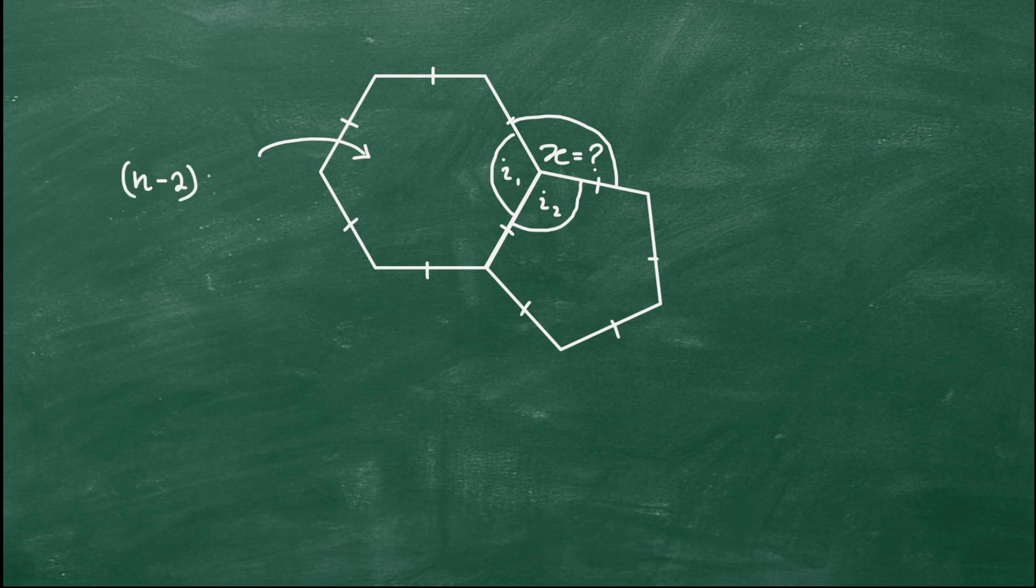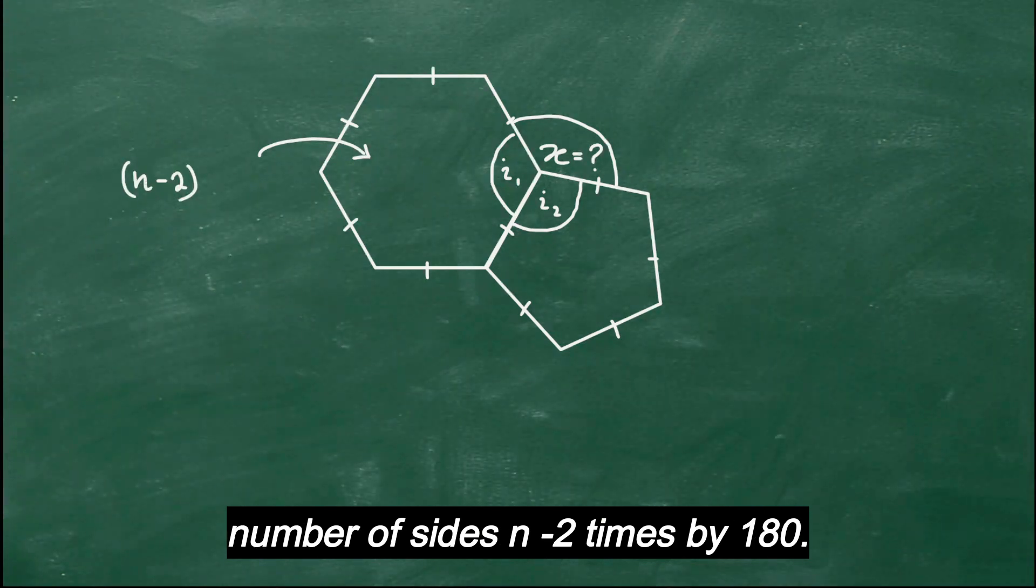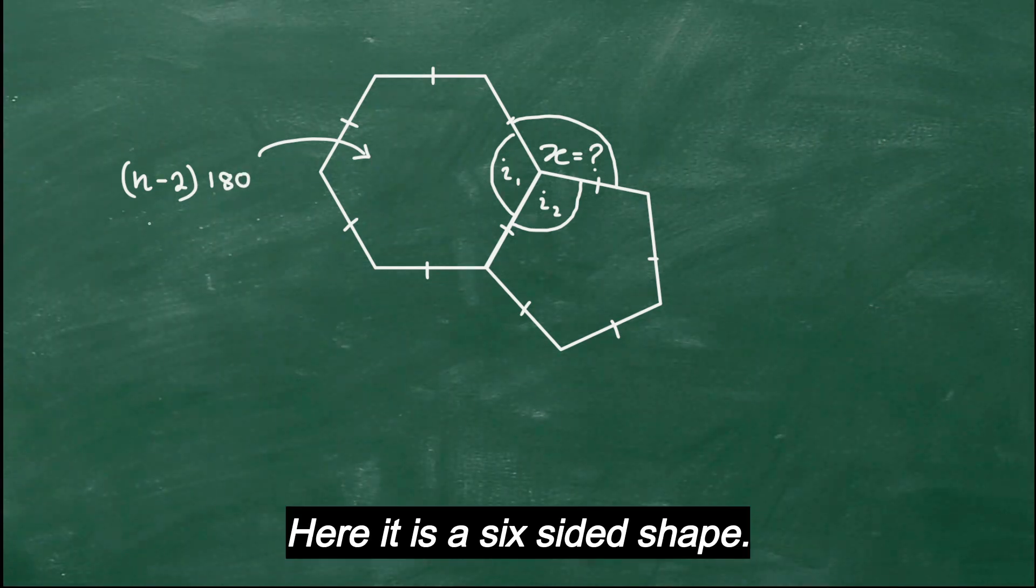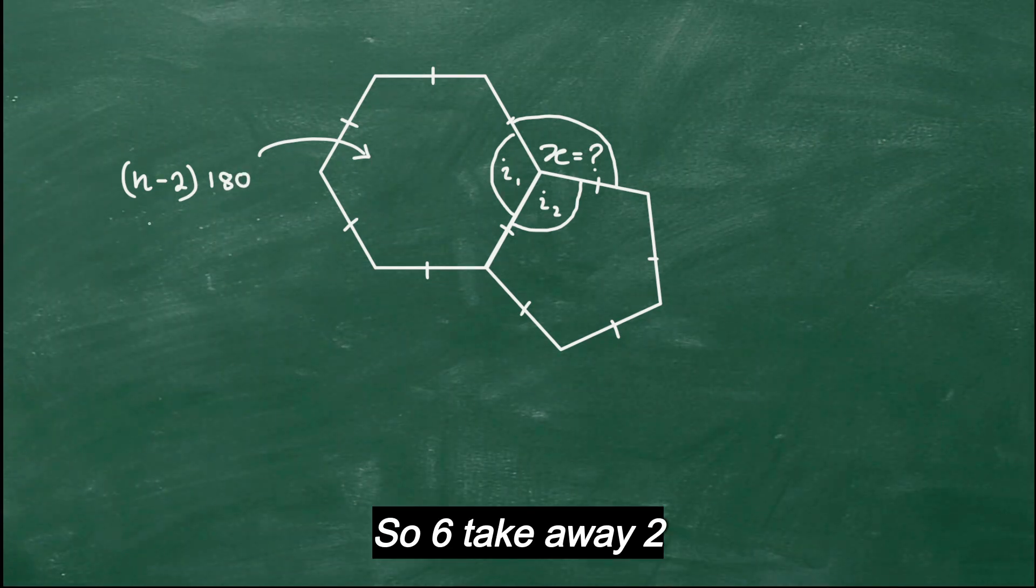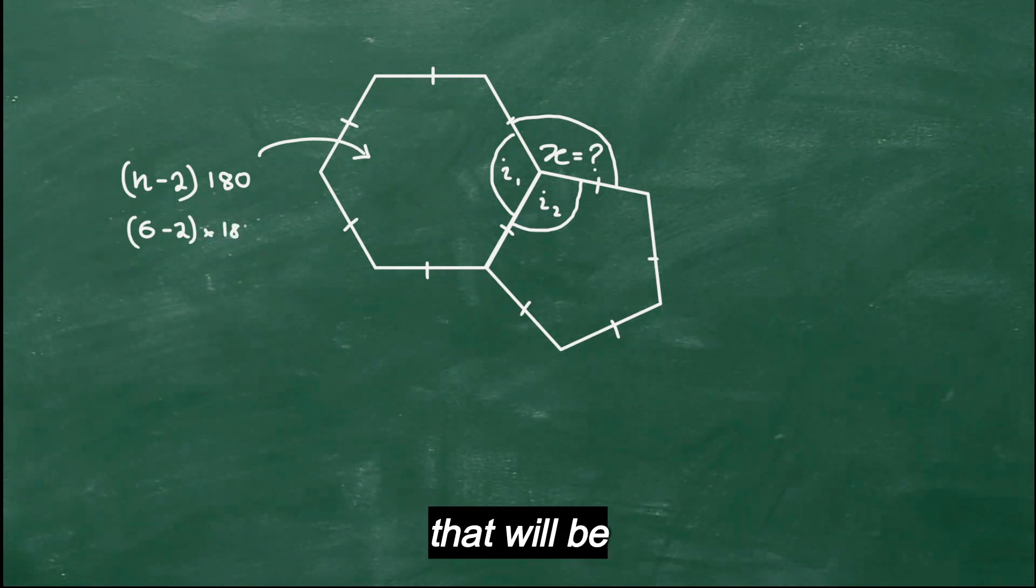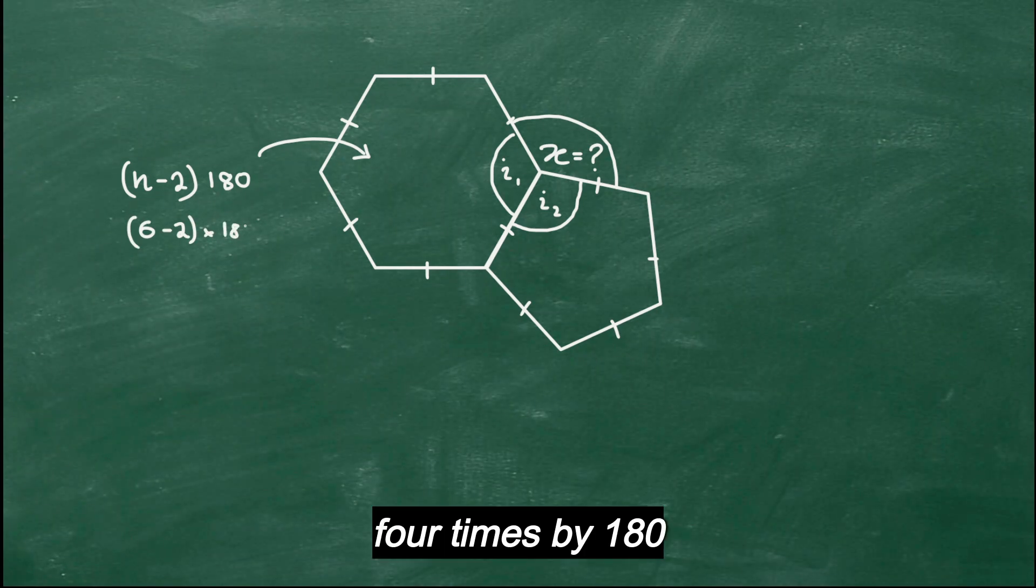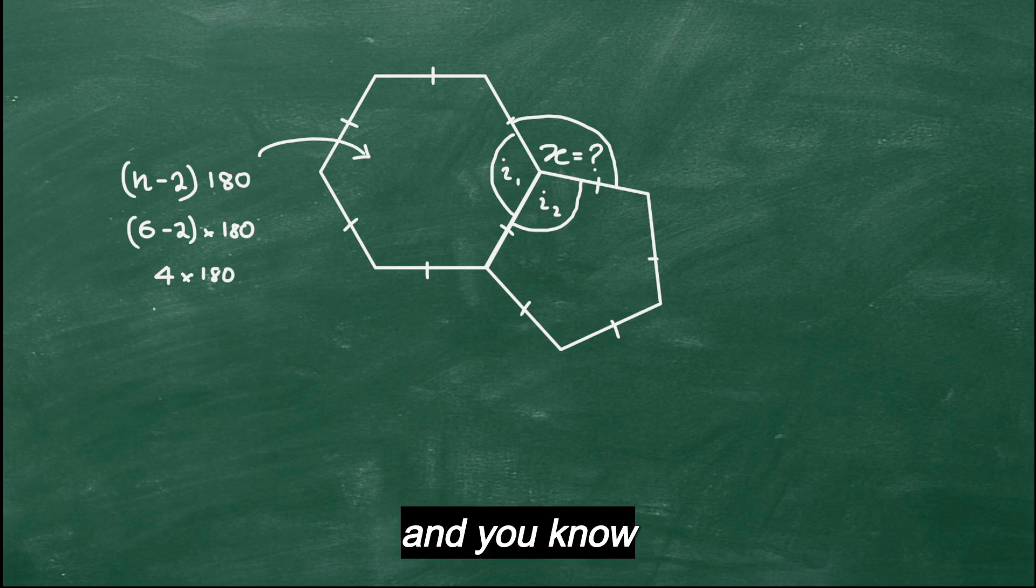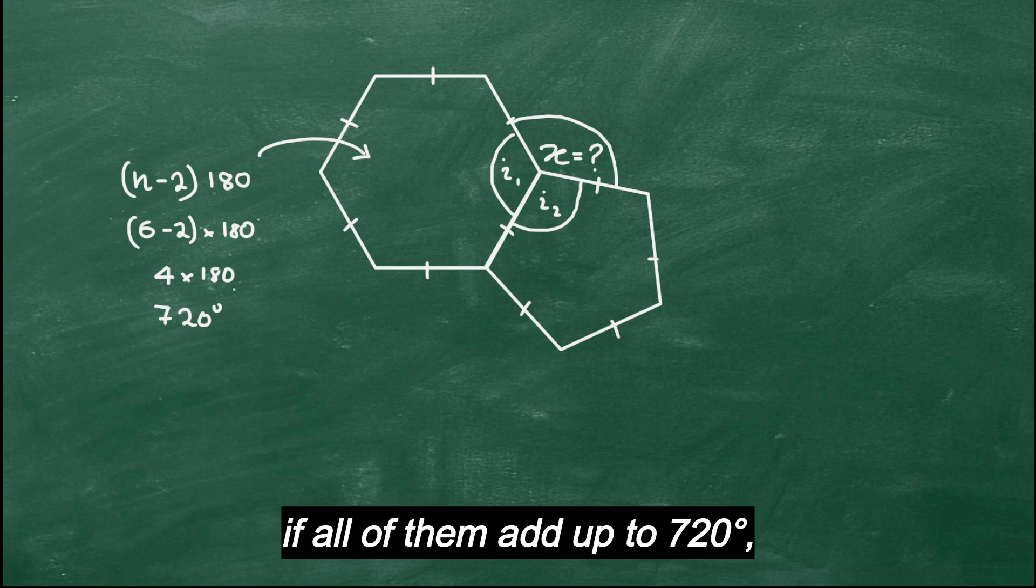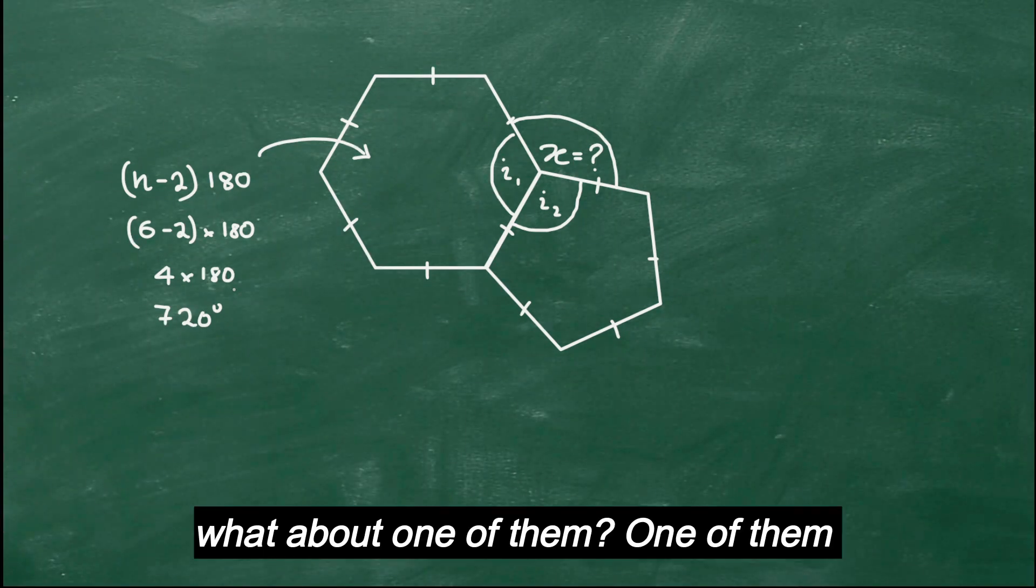It's number of sides, n minus 2, times by 180. Here it's a six-sided shape, so 6 take away 2 multiplied by 180. That will be 4 times by 180, and you know they all add up to 720 degrees.